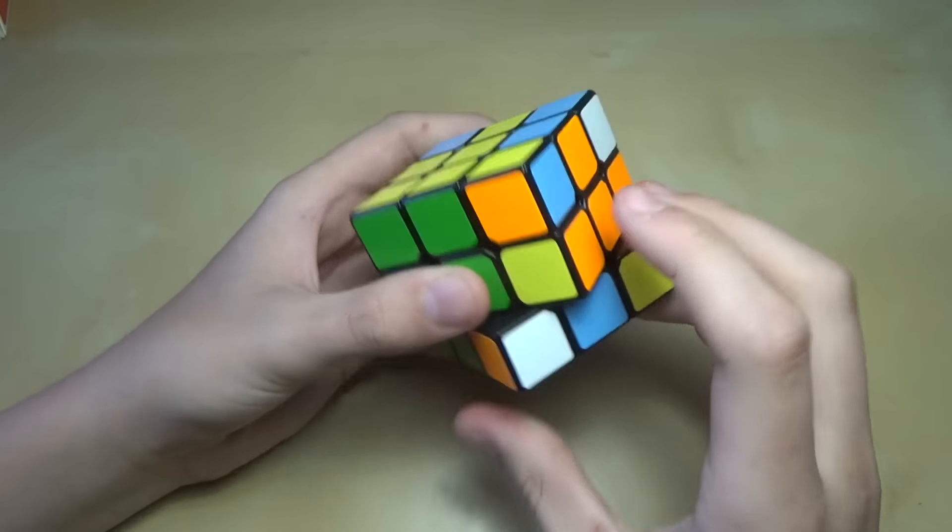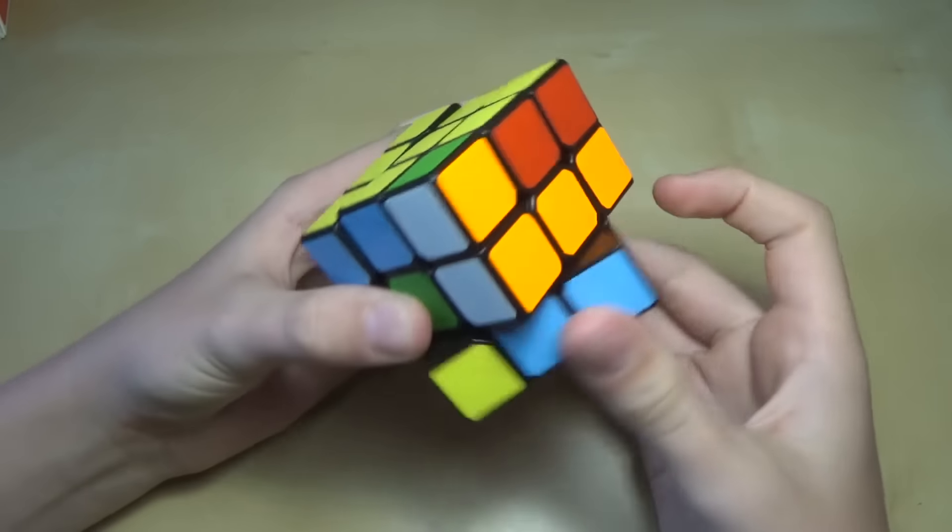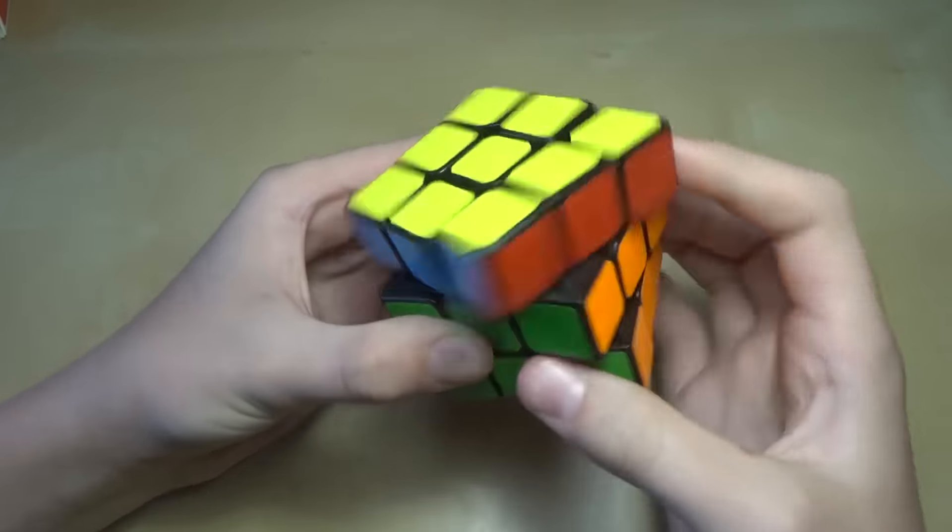Now do r', d', r, d', with all the unoriented corners on the top layer, and do this, doing a u move between each one, until you have it solved.